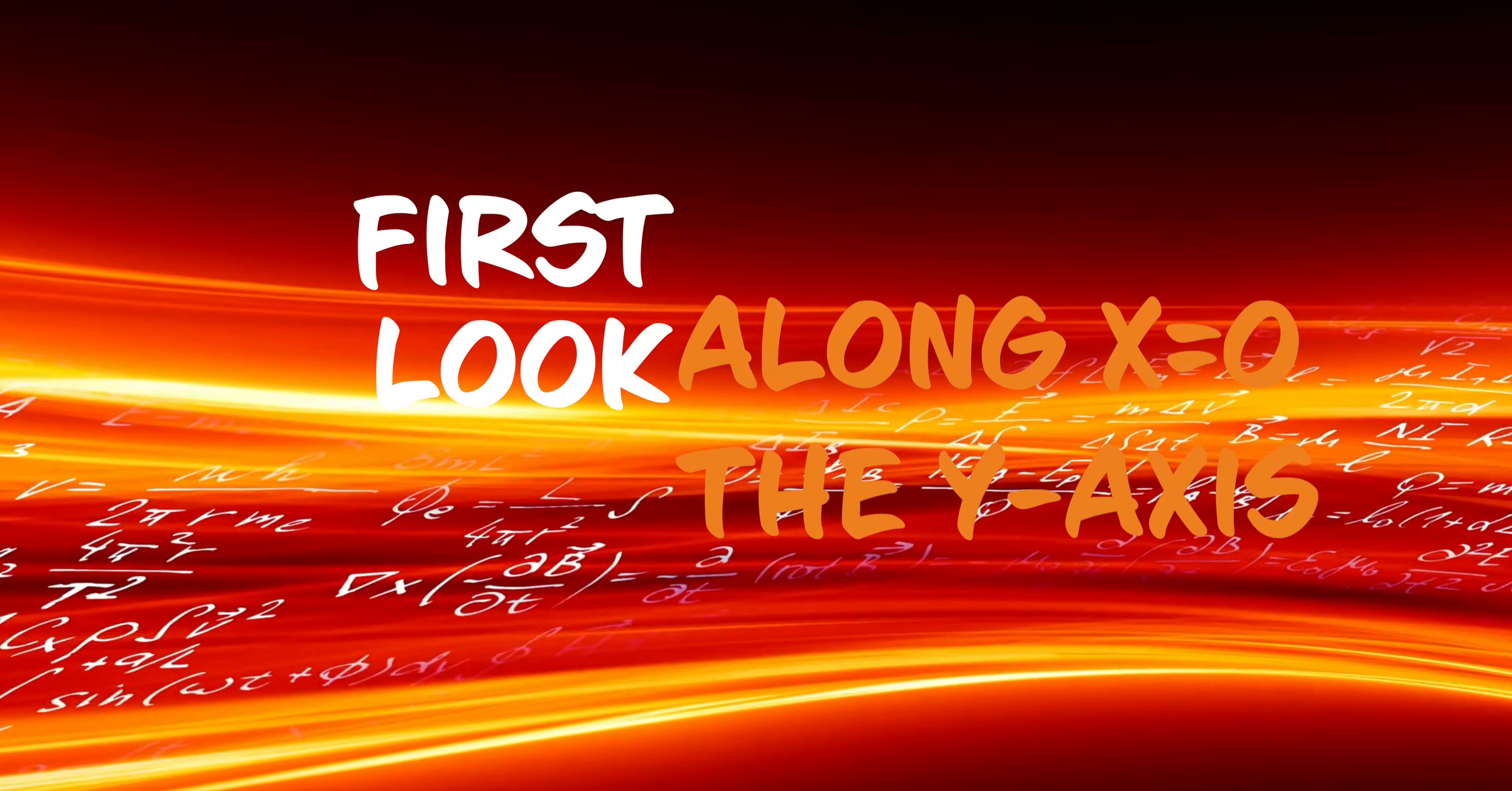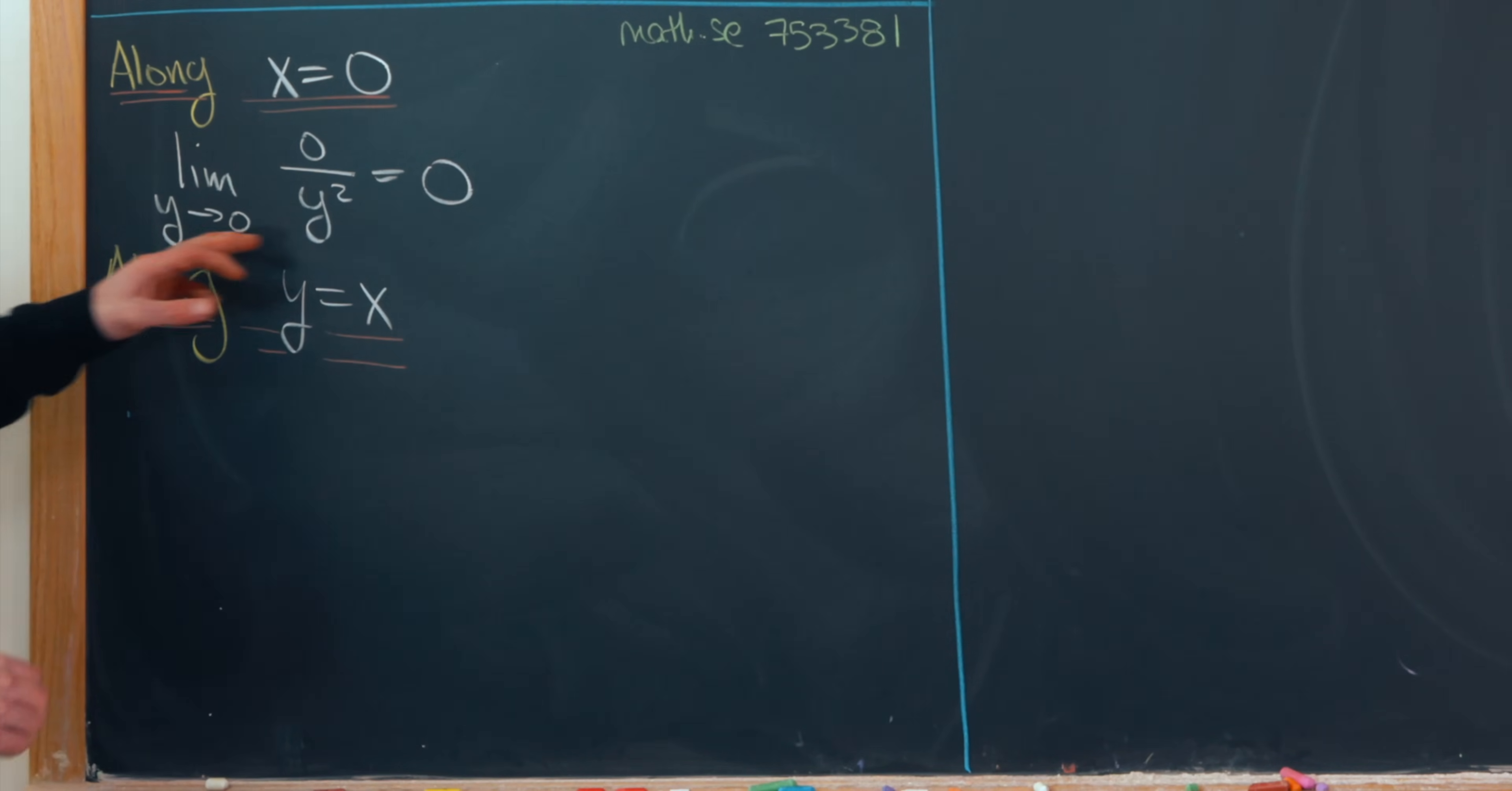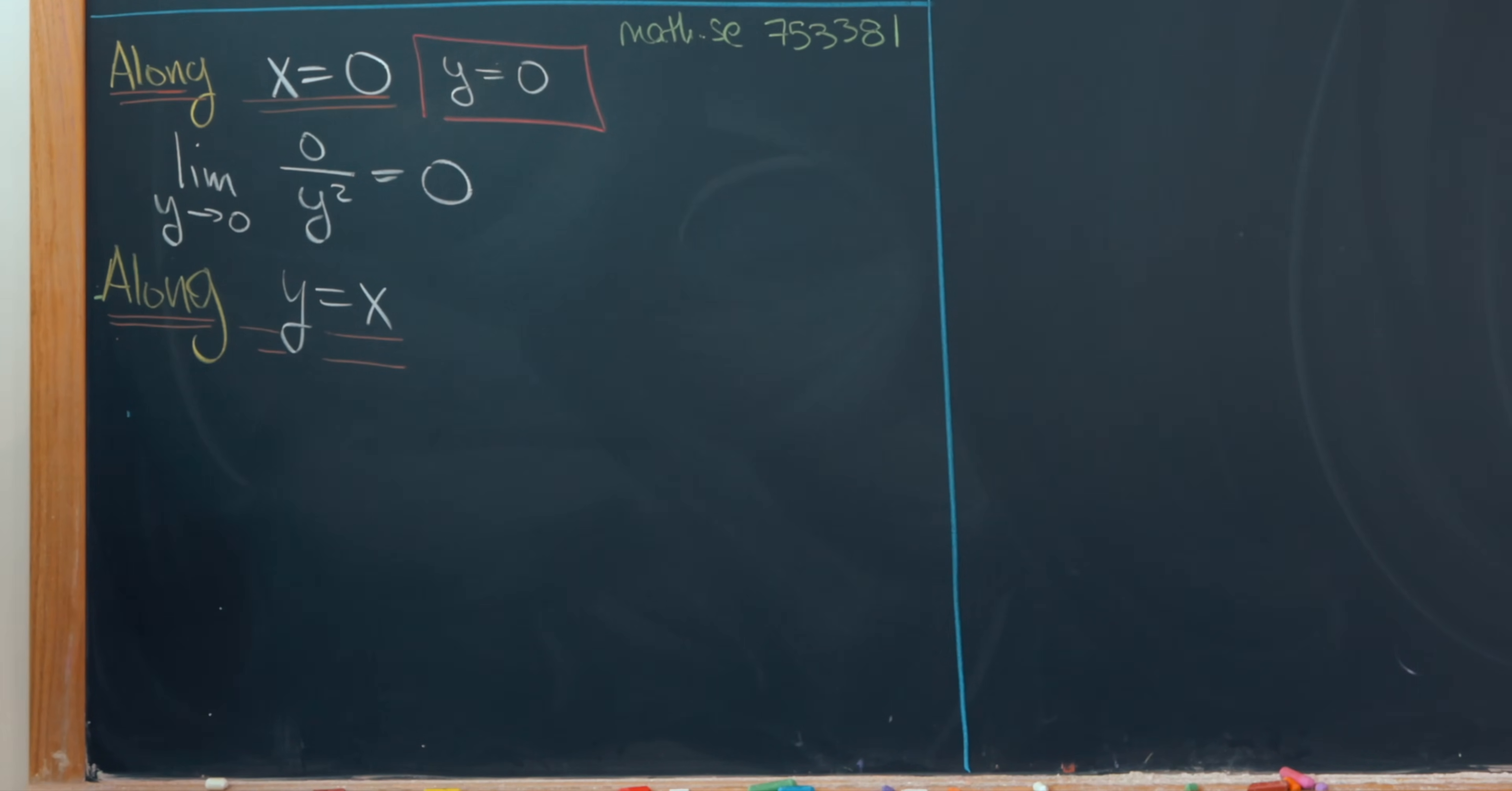Let's first look along the line x equals zero. So that's the y axis. So notice in that case our limit collapses to the limit as y goes to zero of zero over y squared. But that's equal to zero. You might think that's an indeterminate form zero over zero, but that becomes zero before we start taking the limit. And then there's a companion to this, which would be what's happening along the x axis. In other words, what's happening along y equals zero. But you'll see that we achieve the same value of the limit in that case as well.